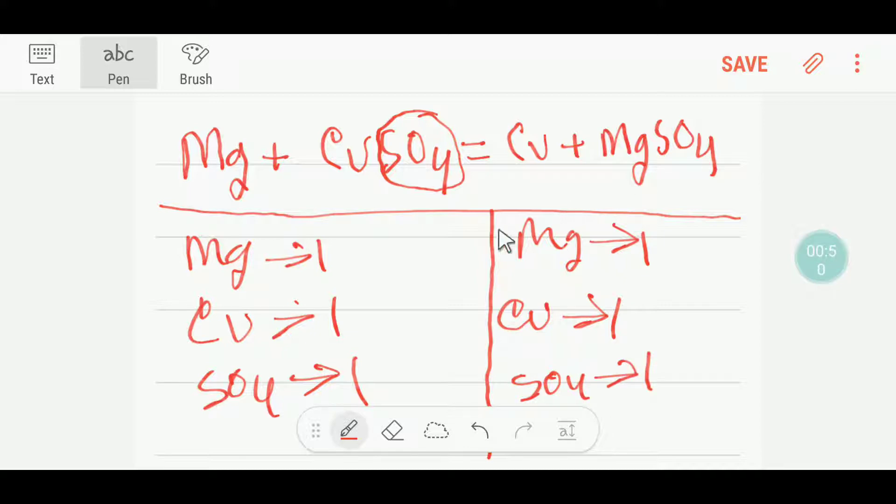Let me check the number of atoms here. We have on the left-hand side or reactant side one magnesium, and on the product side we have one magnesium. On the reactant side we have one copper, and on the product side we have one copper.